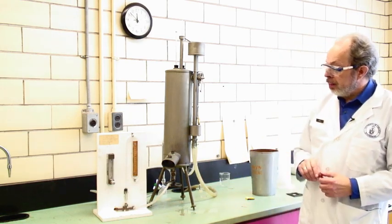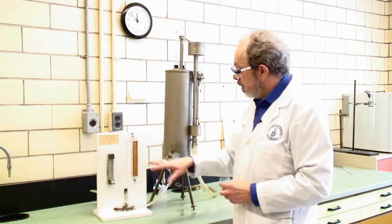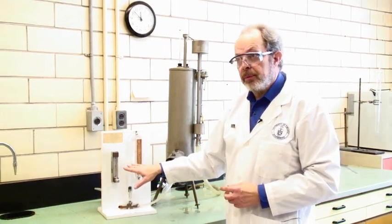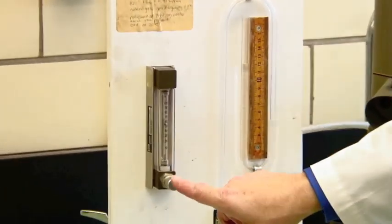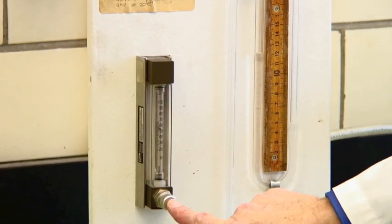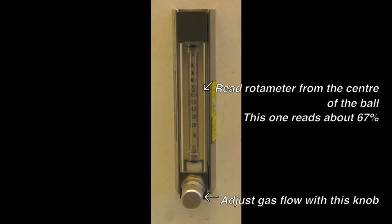The other thing that you need to read is the natural gas rotameter. This knob on the bottom of the rotameter controls how fast the gas is coming through. At the moment it's at about 55 percent. You always read from the middle of the rotameter ball.